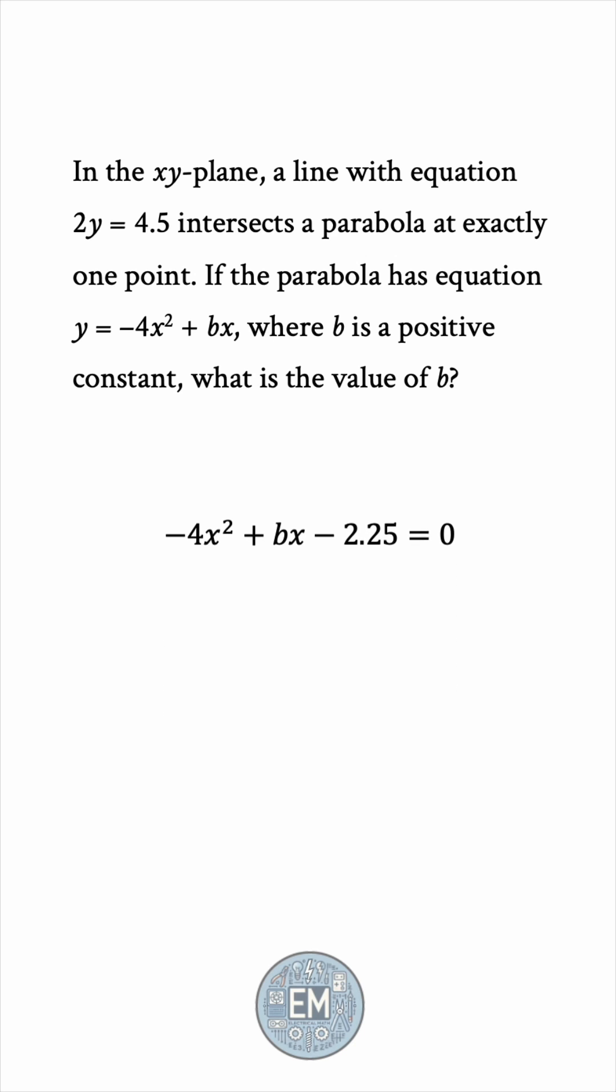Now, if we want the intersection to be at exactly one point, then this equation must have one solution only. So the discriminant b squared minus 4ac must be 0.